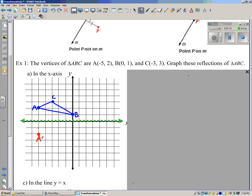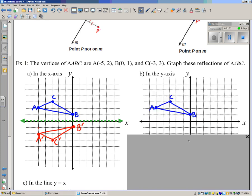B is going to be one unit away on the other side of the x-axis. B prime. And C prime is going to be three units away on the other side of the x-axis. And then you connect vertices to make your image.